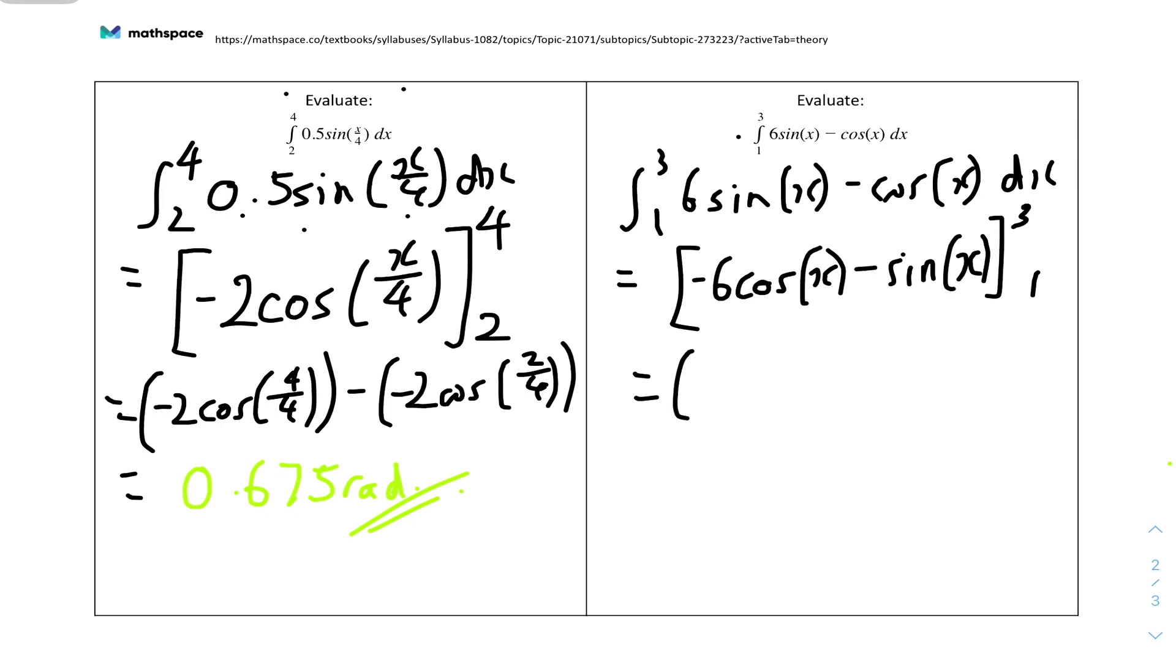And now you can evaluate it by doing minus 6 cos(3) minus sine(3) minus [minus 6 cos(1) minus sine(1)]. Because you're basically just inputting the bracket of the limit to the different x values. If you type that into your calculator, you get a value of 9.88 rad. And that's the final answer.